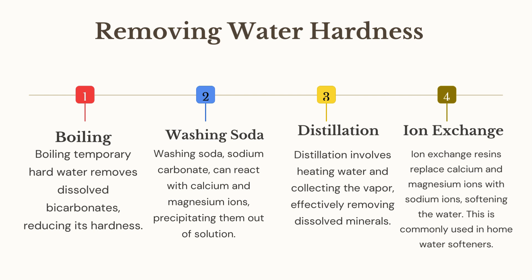Three is distillation, which involves heating water and collecting the vapor, effectively removing dissolved minerals. And finally, the fourth method is ion exchange. Ion exchange resins replace calcium and magnesium ions with sodium ions, softening the water. This is commonly used in home water softeners.